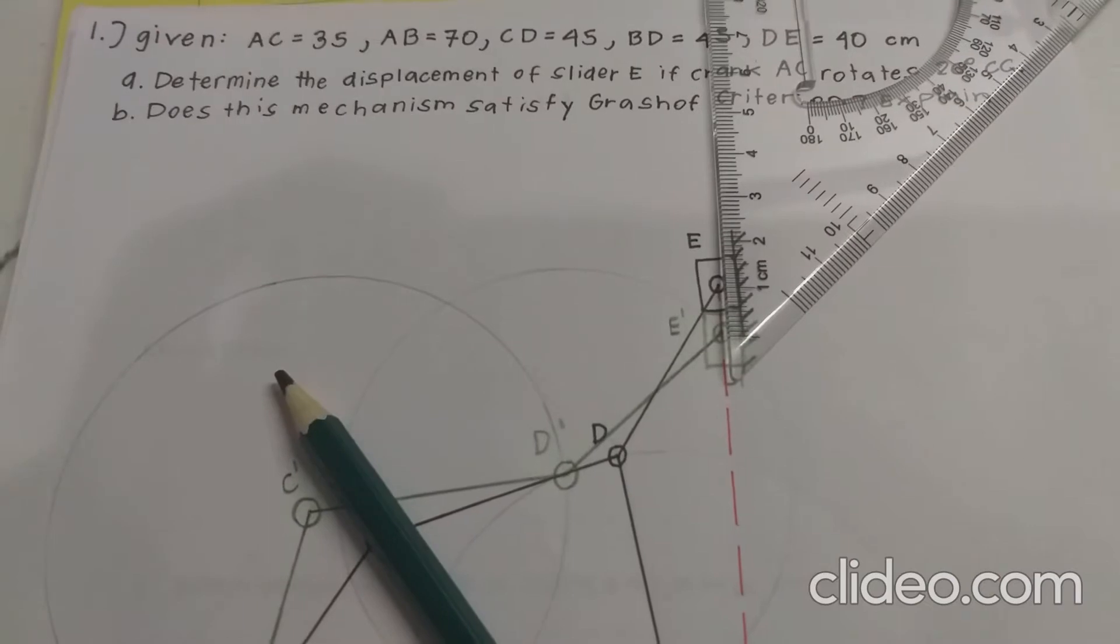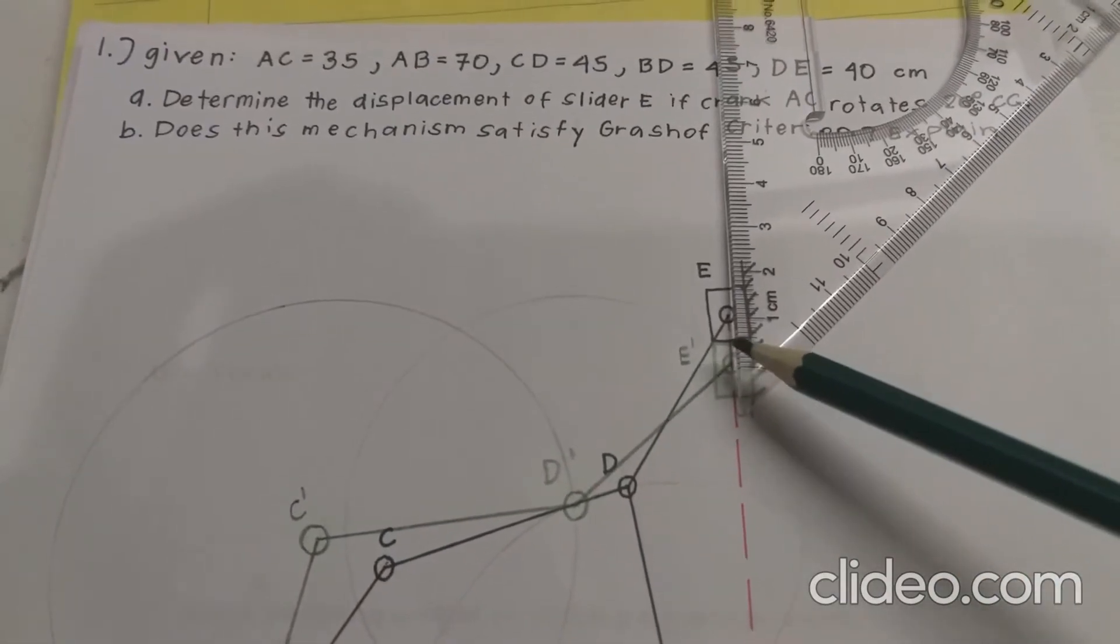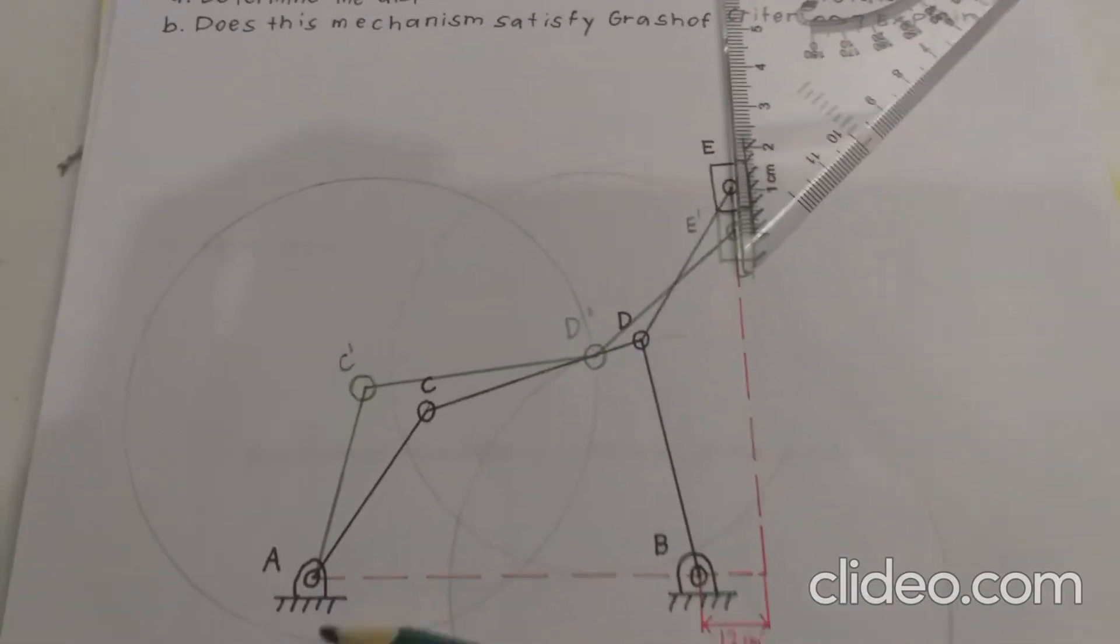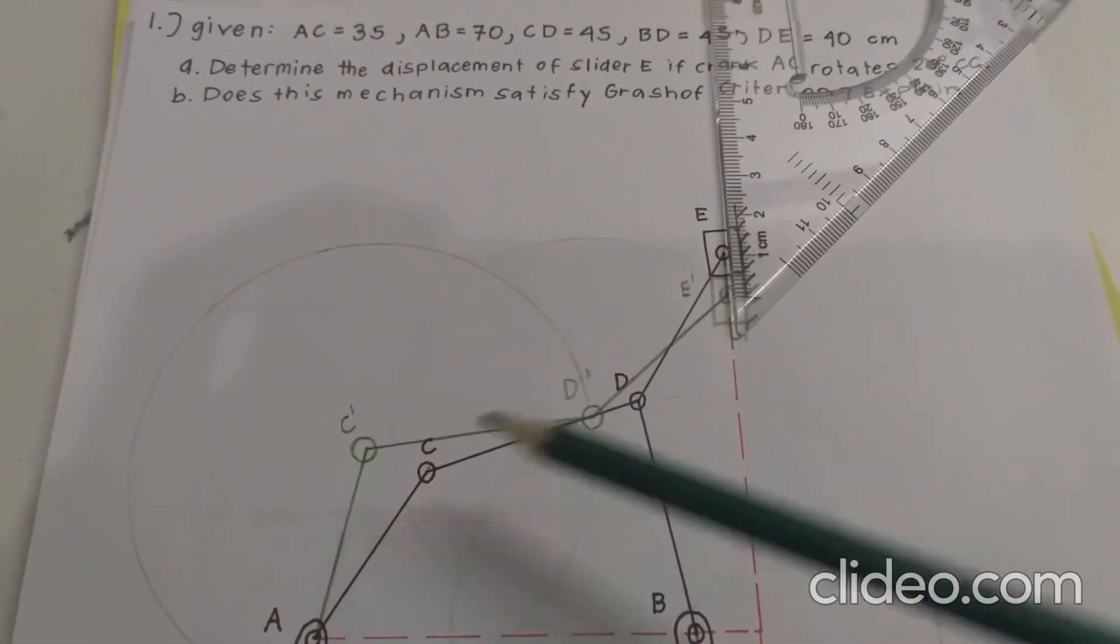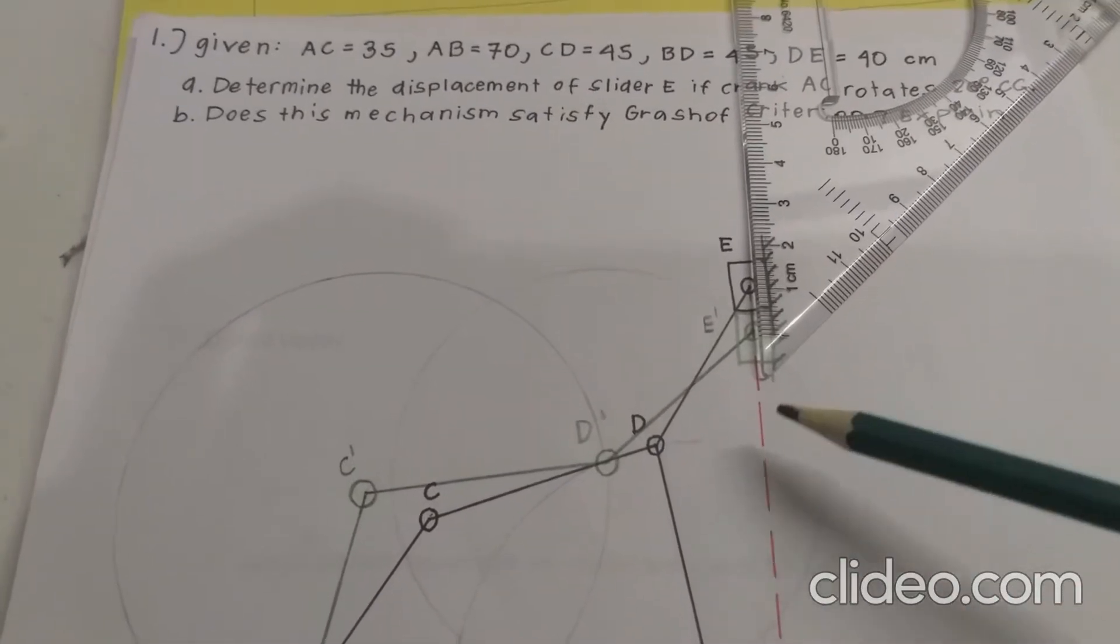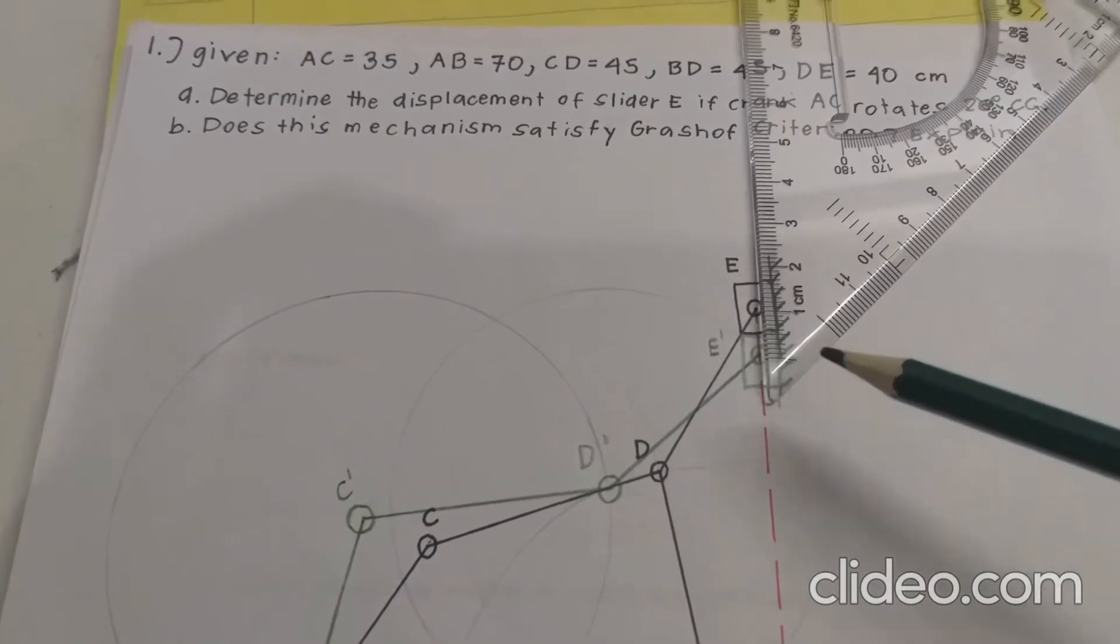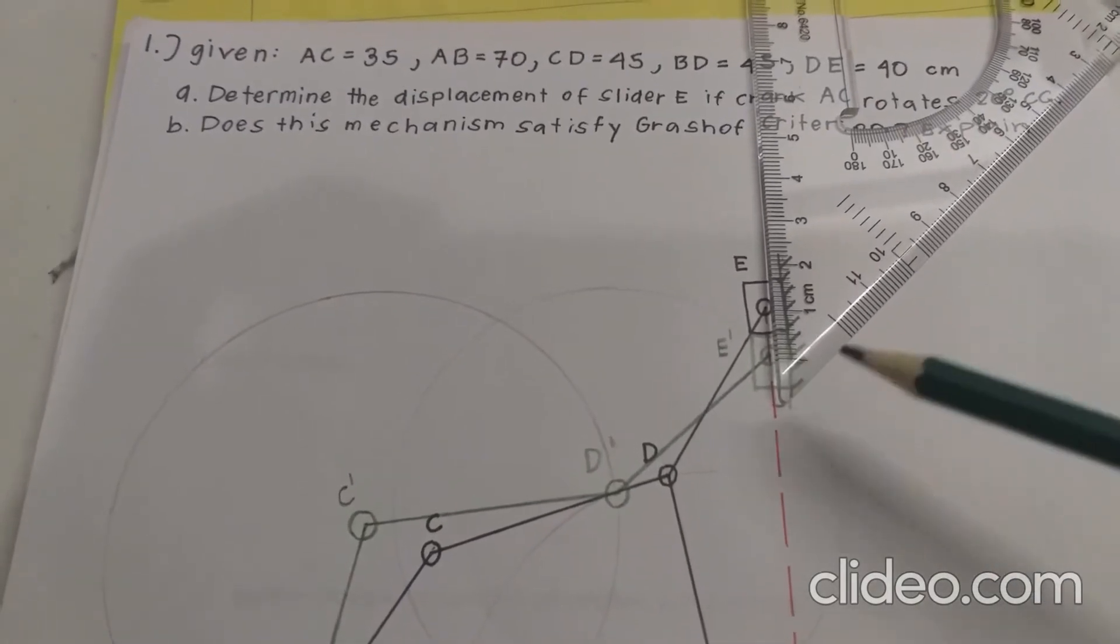So after finally finding the displacement of slider E, if crank AC rotates 20 degrees counterclockwise from its original position, we can find that the displacement of slider E is around 10 to 12 centimeters downwards.